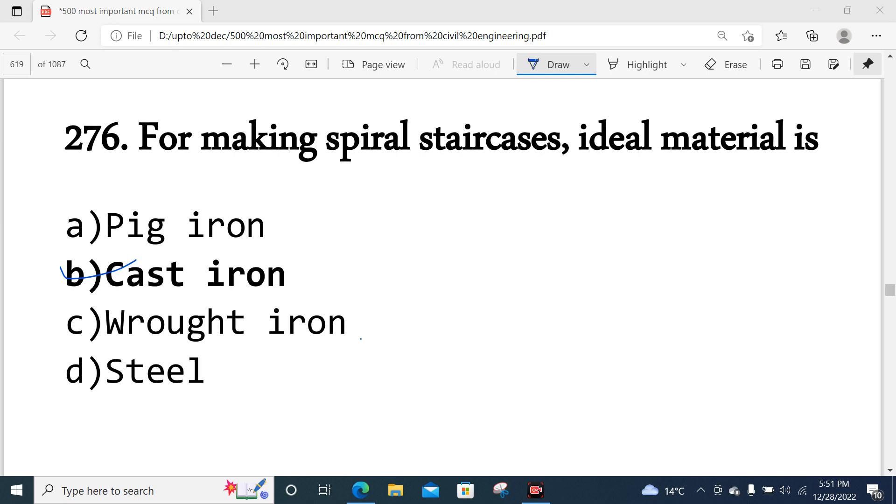Question number 276: For making spiral staircase, ideal material is - Pig Iron, Cast Iron, Wrought Iron, or Steel. The correct option is Cast Iron.